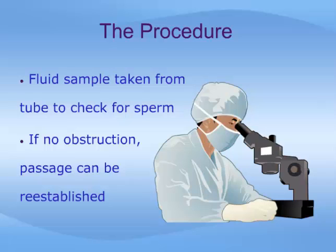The presence of sperm in the fluid indicates that there is no obstruction between the testicle and the location in the tube where the fluid was taken. Therefore, the passage can be re-established by reconnecting the ends of the vas — this is called a vasovasostomy. If there is no fluid or obstruction is otherwise found, the vas may have to be cut further back toward the testicle until an open channel is found, a process that may carry all the way back to the epididymis, thus necessitating a vasoepididymostomy.